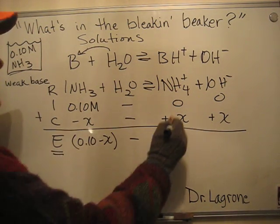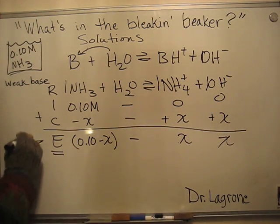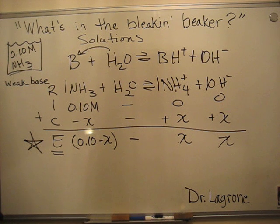So you end up with 0.10 - X, 0 + X is X, 0 + X is X, and there you have it. This is what you base your equilibrium expression on.